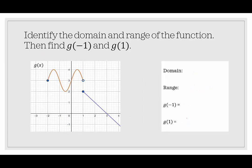In this next example, we want to identify the domain and range, and then find g of negative 1 and g of 1. For the domain, the furthest left is at negative 2, which is included, so we use a bracket. It appears to stop at 1 where 1 is not included at the top piece, but down below 1 is included, so there's no break in the domain — just a break in the graph. Since the graph continues without a closed or open circle on the right side, it extends to infinity. So the domain is [−2, ∞).